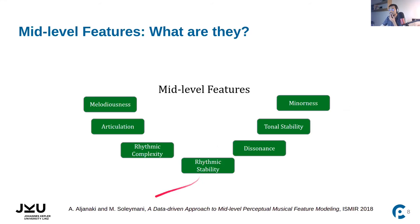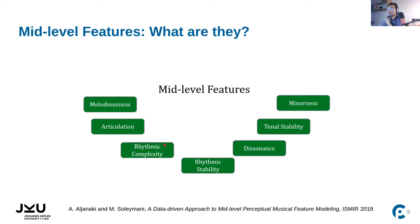In a 2018 paper, Aljanaki et al. proposed seven mid-level features and released an accompanying dataset. These features are melodiousness, articulation, rhythmic complexity, stability, dissonance, tonal stability, and minorness. We use these features as our explanatory features for this work.